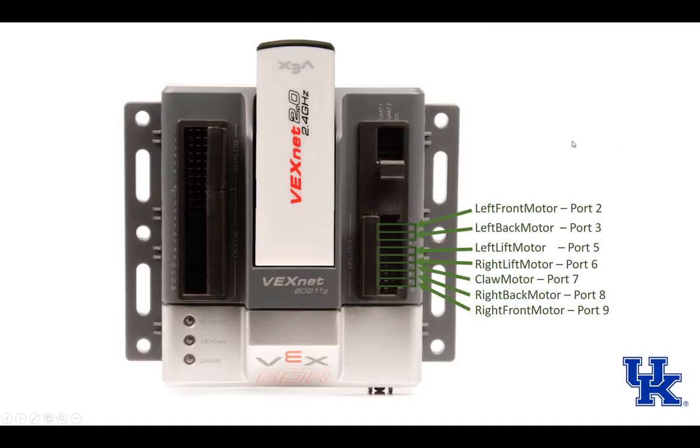For my port selection, typically what I like to do is take my left side of the robot and put all ports one through five, and the right side all six through ten. It just makes it where I can find things quicker and it's more organized in my mind.